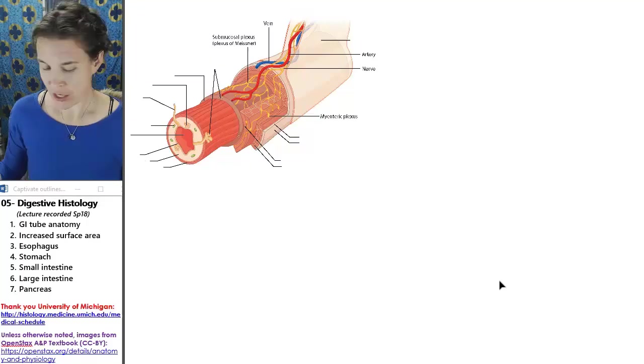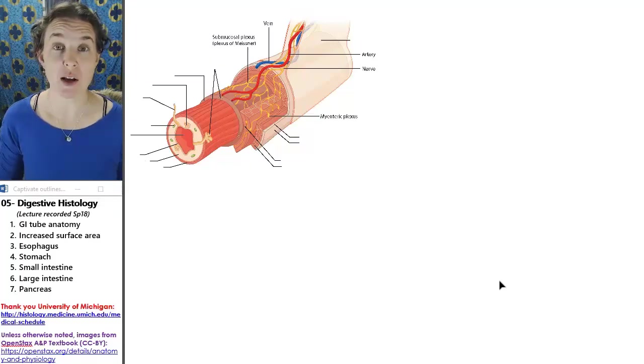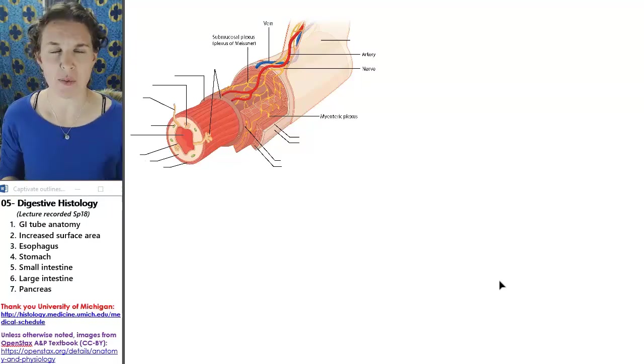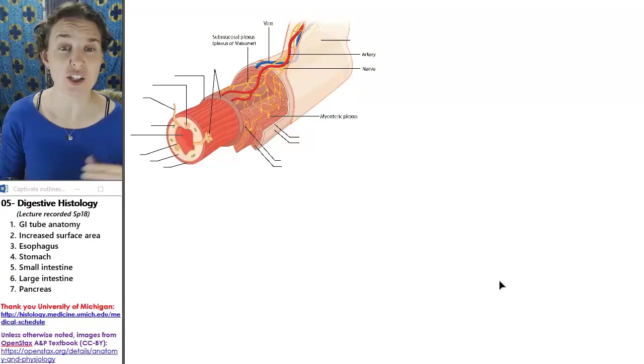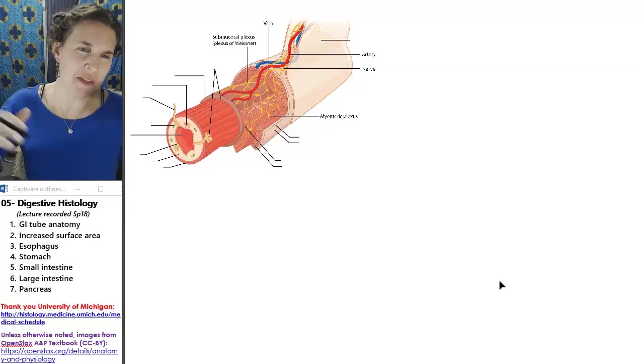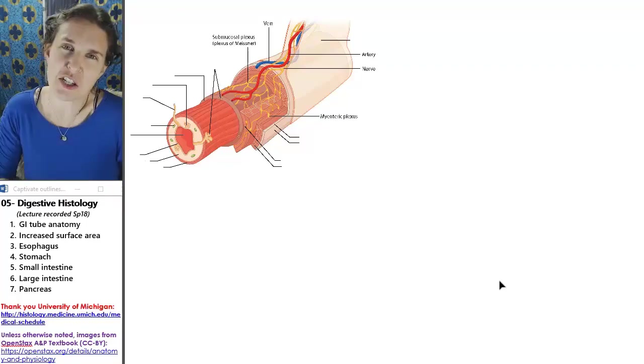Hey, you guys. So we're back today to talk about the other half of the digestive system. In the last lecture, we went through gross anatomy of the digestive system. We looked at the tube, named all the parts of the tube, and named the things that dump stuff into the tube.